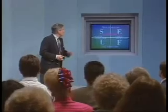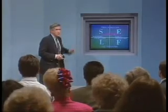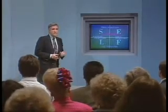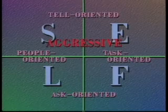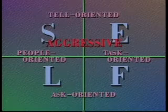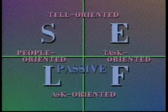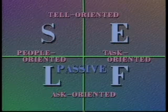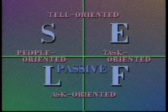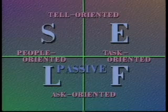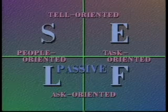To the people on the top of the chart, their behavior is often expressed in a more aggressive fashion. And that's going to be important when we try to understand difficult behavior. People in the bottom part of the chart have a tendency to be more passive, and that also will be very important to understanding difficult behavior.